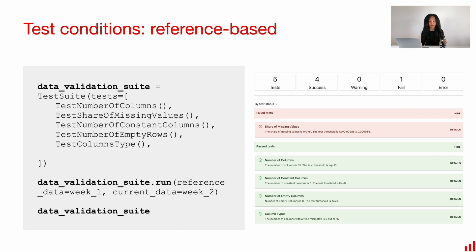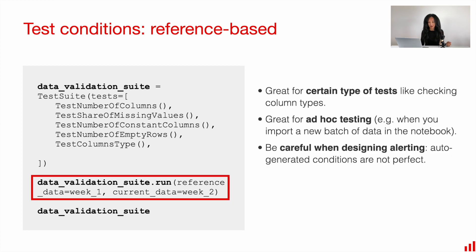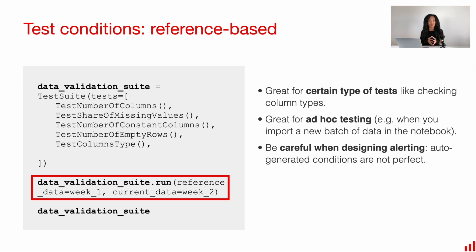Together with individual tests and test suites, you need to come up with the conditions — your testing approach needs to know when to alert. The first strategy is to create a reference dataset, which is often much more convenient than creating individual conditions for each test. This is great for certain types of tests like checking column types, and also very convenient for ad-hoc testing when you receive a new batch of data and want to quickly understand what's going on. However, be careful with alerting, because auto-generated conditions are never perfect — you can miss something important or get a lot of false alerts.